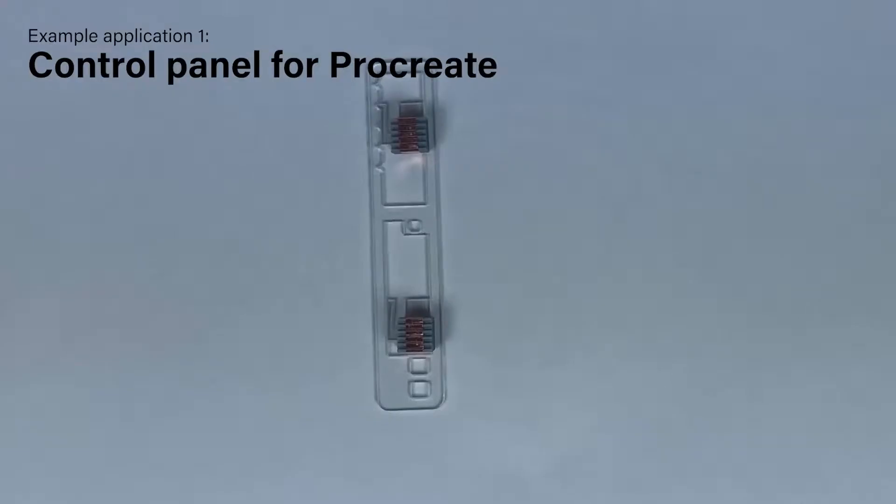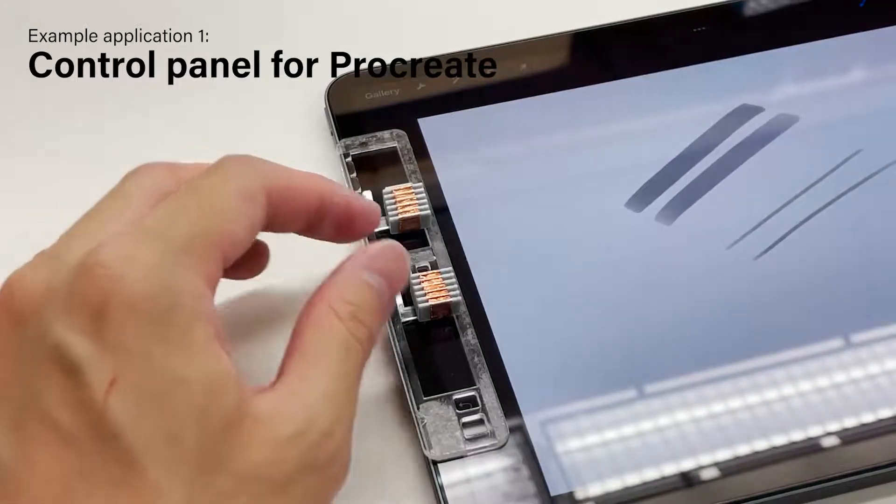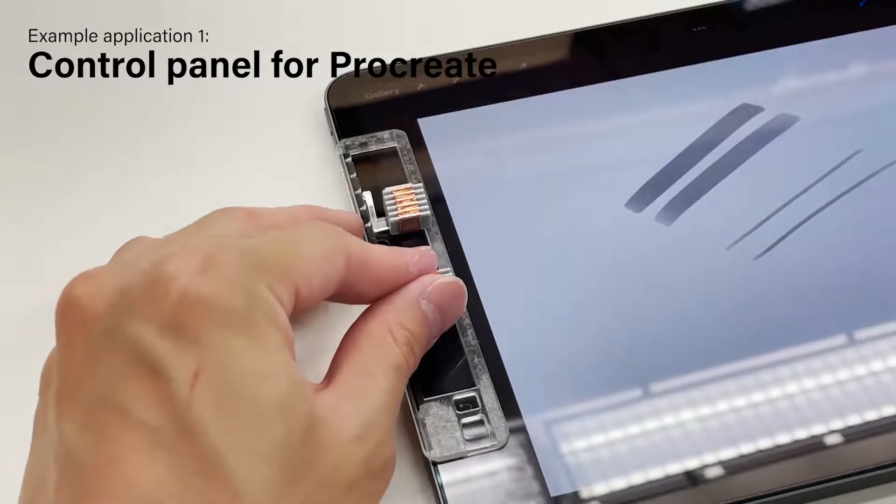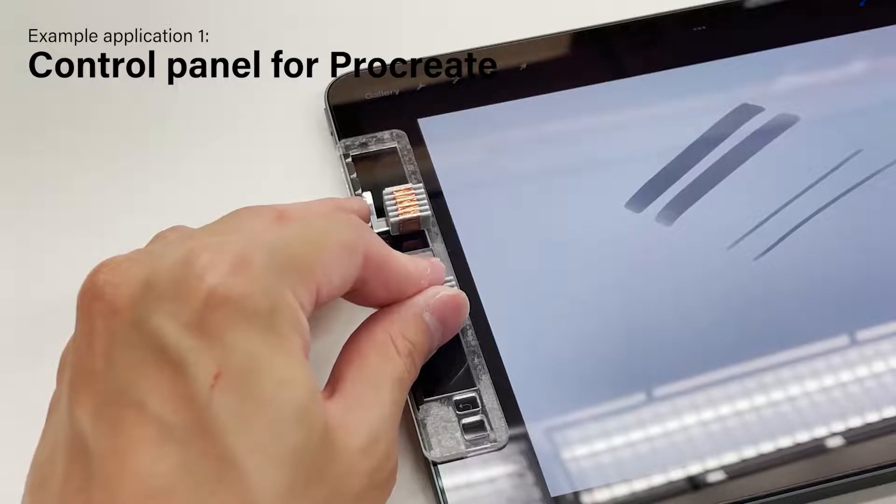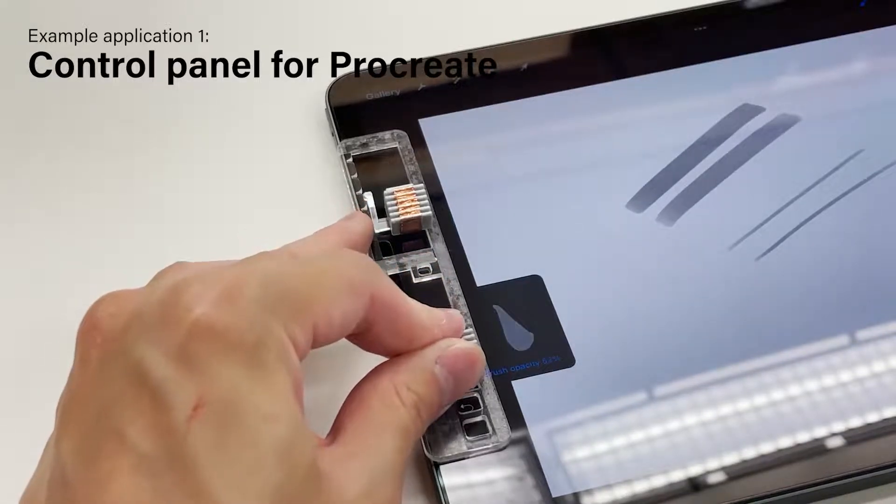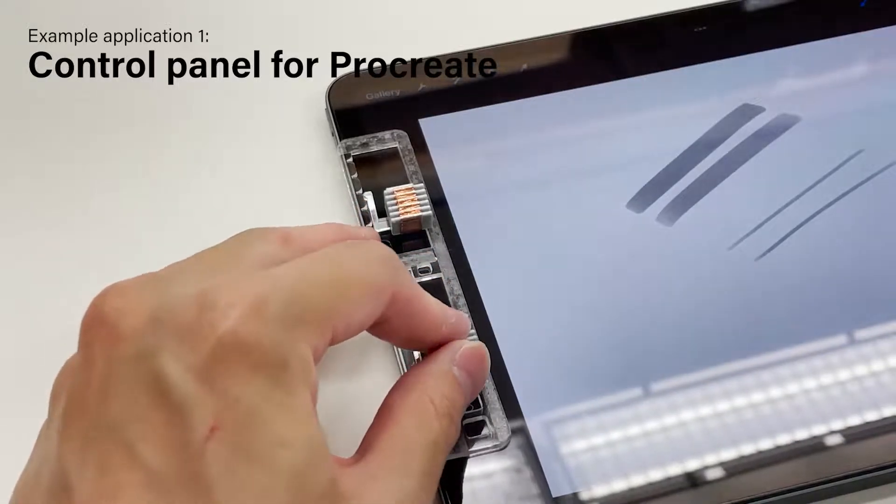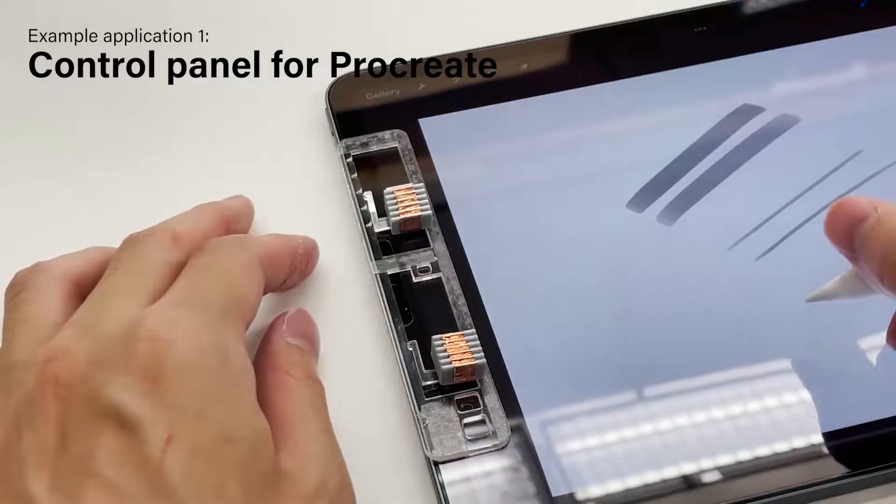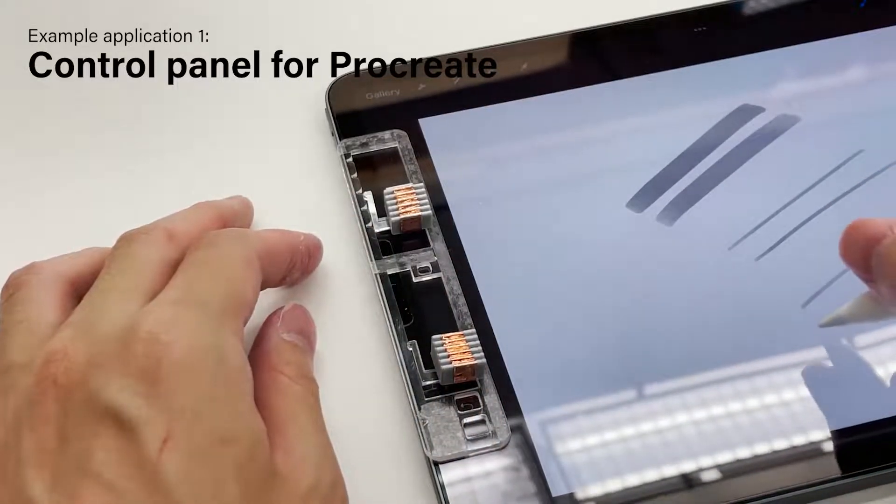The haptic control panel for a painting application is proposed to reduce divided attention cost between canvas and toolbar. It employs a linear resistance module for changing brush size, and a linear detent module notched at preferred values for adjusting opacity.